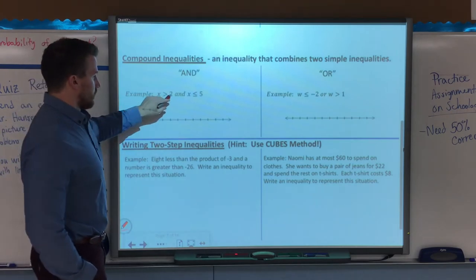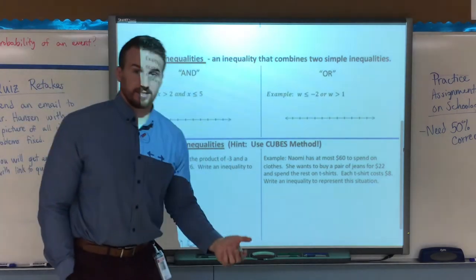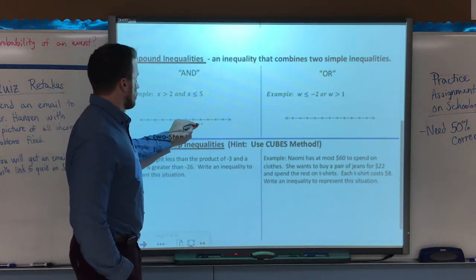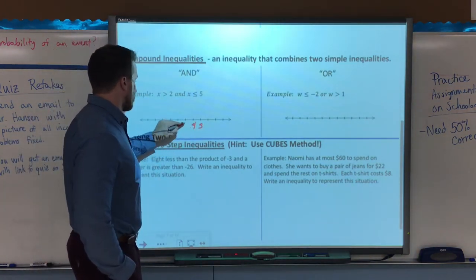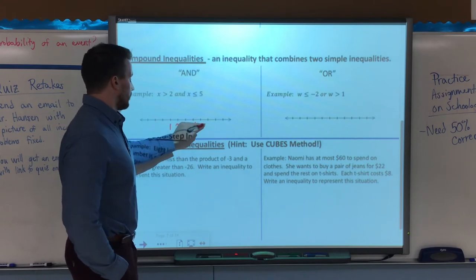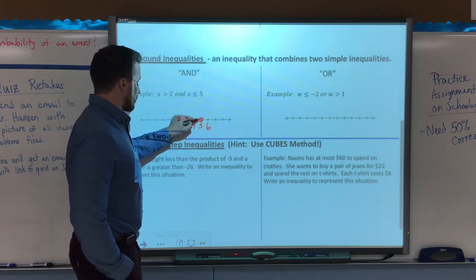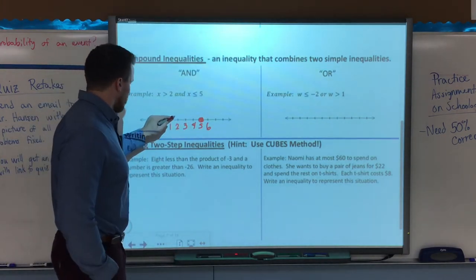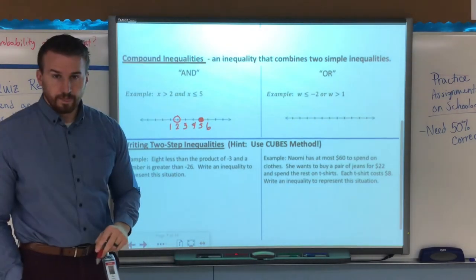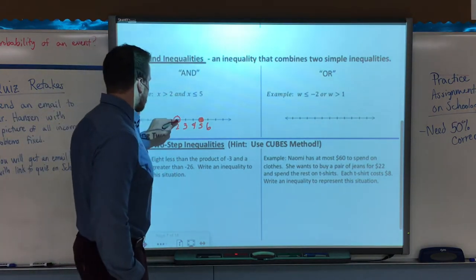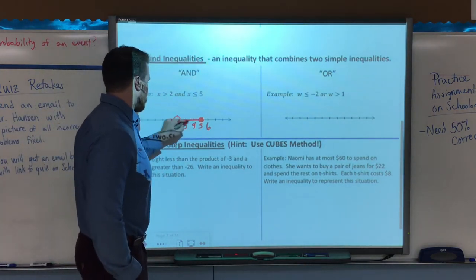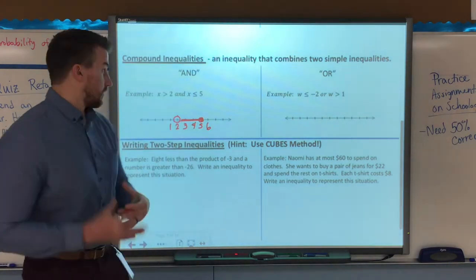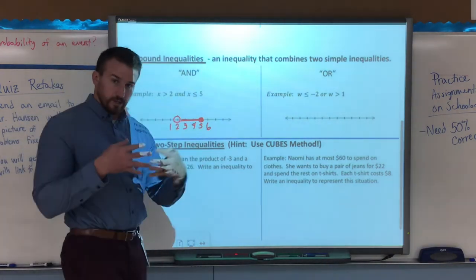We have x is greater than 2, and x is less than or equal to 5. So I have my number line here. Here's 5, 4, 3, 2, 1. It's going to be a closed circle at 5, because it's less than or equal to. It's going to be an open circle at 2, because it's greater than, and if this is going to the right, this is going to the left, they connect in the middle. So basically it can be any of those numbers in the middle there. And means it goes together.